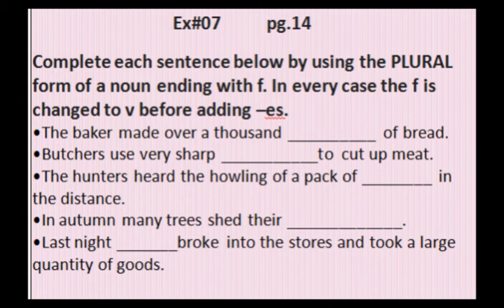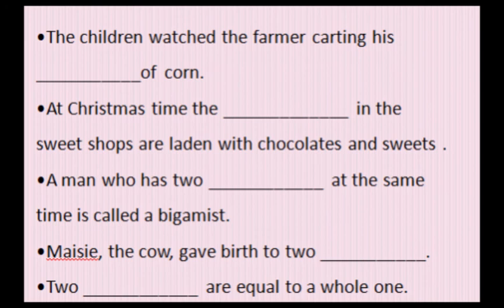Fourth sentence: 'In autumn, many trees shed their dash.' In autumn, trees shed their leaves. Fifth sentence: 'Last night, dash broke into the stores and took a large quantity of goods.' Goods means any items or belongings. The answer is thieves — last night, thieves broke into the stores.